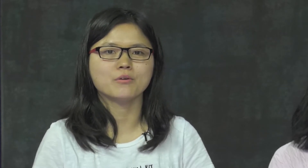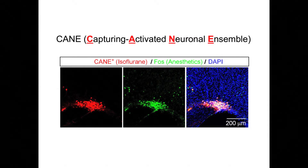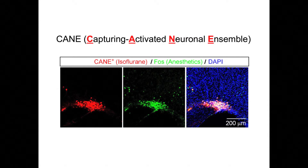Next, we wanted to selectively manipulate these anesthesia-activated neurons and observe the consequences on animal behavior. To achieve this goal, we employed a viral genetic strategy called KANE — Capturing Activated Neuronal Ensembles — that our lab previously developed, which can be used to express any desired gene in the targeted neurons. With KANE technology, we specifically delivered either fluorescent markers or chemogenetic and optogenetic actuators into these anesthesia-activated neurons.